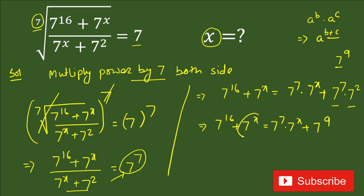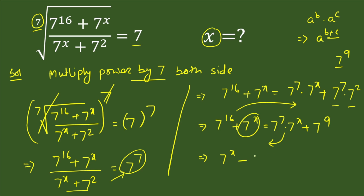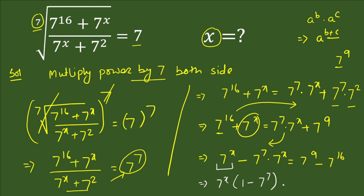We move all terms with 7 power x to the left hand side and the remaining terms to the right hand side. So: 7 power x minus 7 power 7 times 7 power x equals 7 power 9 minus 7 power 16. Taking 7 power x common on the left gives: 7 power x times (1 minus 7 power 7).